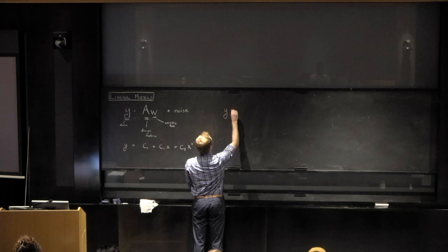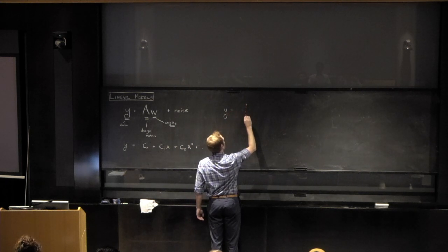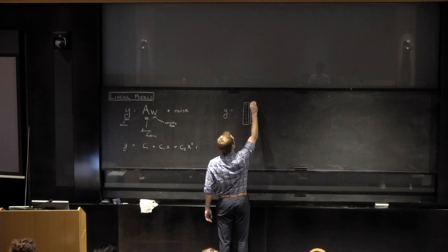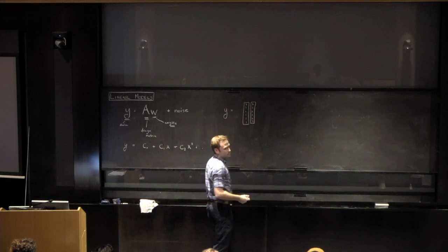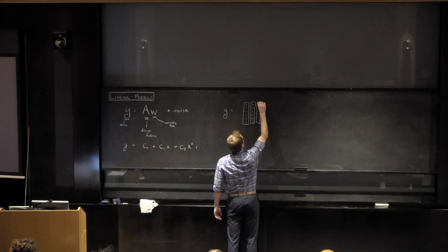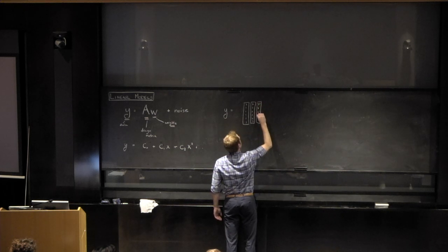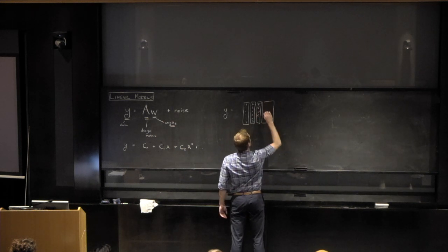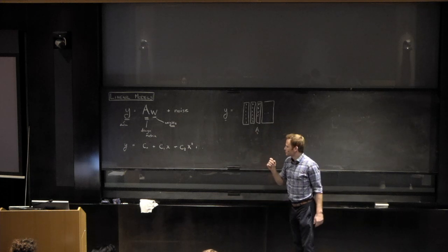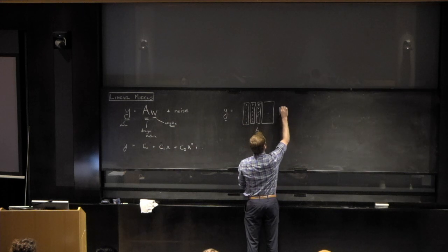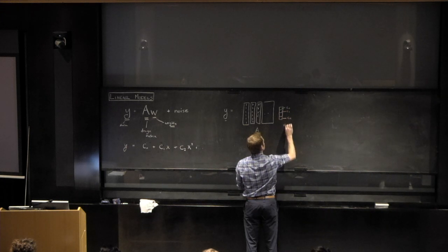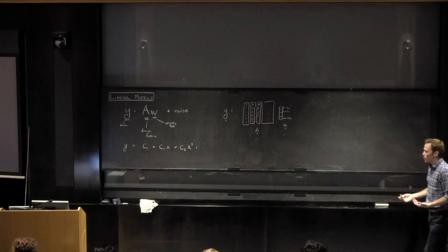Y equals a matrix whose first column is ones, second column is x evaluated at every point, then x squared, x cubed, x to the fourth — this is your design matrix A. The vector of weights is just a vector of coefficients c0, c1, down to cn. That's how you write the linear equation for fitting a polynomial to data.